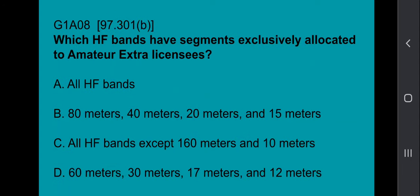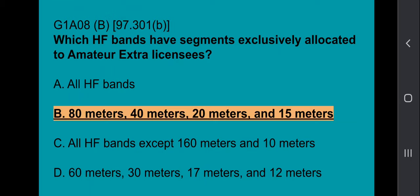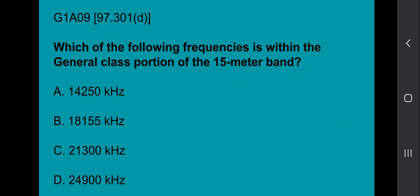G1A08: Which HF bands have segments exclusively allocated to amateur extra licensees? The answer is 80, 40, 20, and 15 meters.